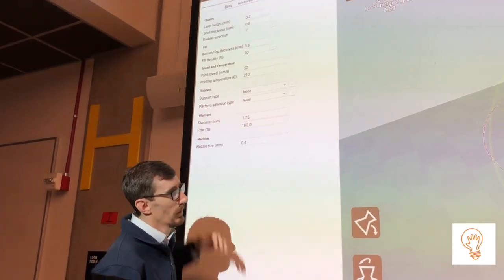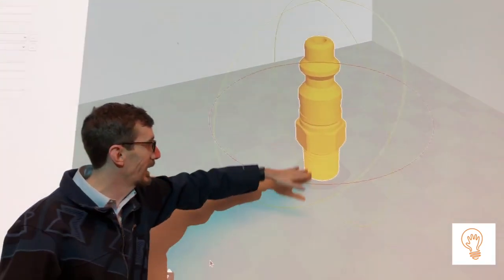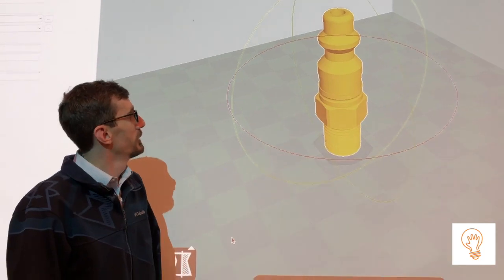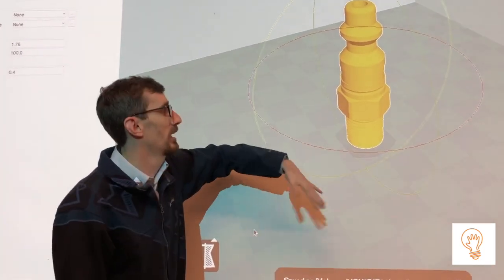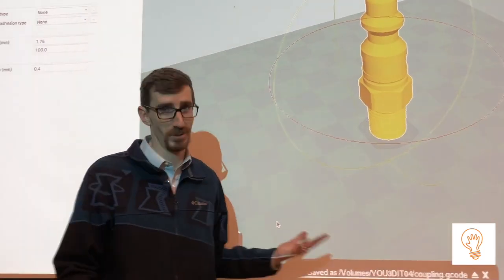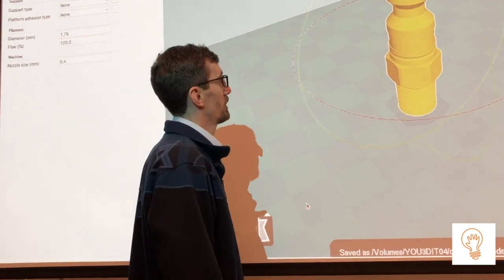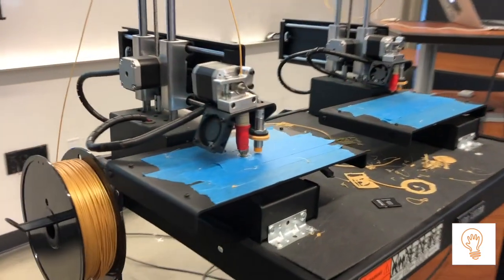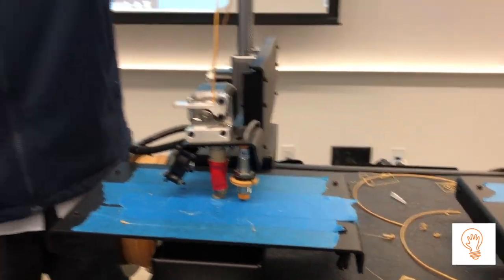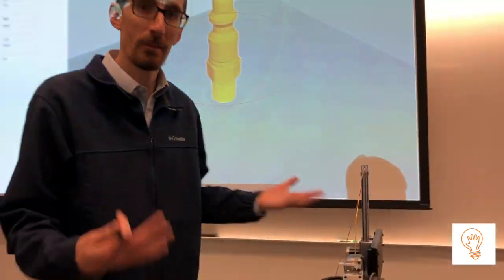We're expecting to see a circle here and I can start to see hints of a circle. The first layer is extremely important for a successful print. You want to make sure you have enough material for that first print to really get good adhesion.